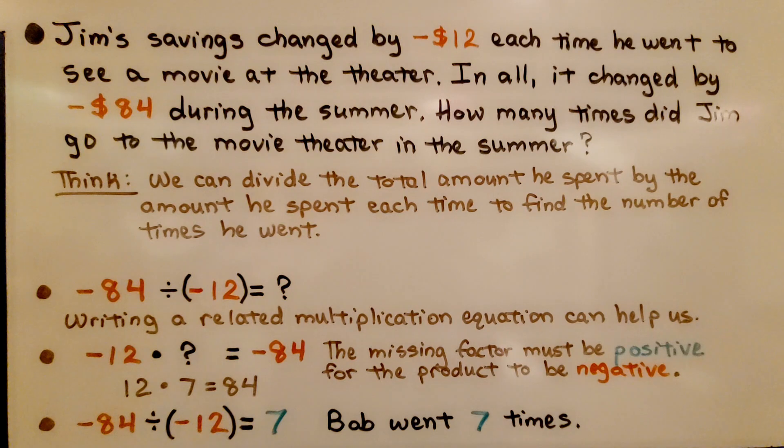Here's another problem. Jim's savings changed by negative $12 each time he went to see a movie at the theater. In all, it changed by negative $84 during the summer. How many times did Jim go to the movie theater in the summer?